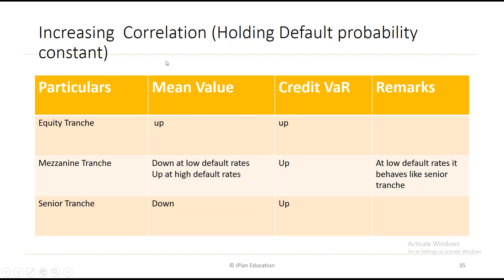The convexity of tranches: at low correlation, the equity value is positively convex in default rates — losses rise rapidly as the default rate rises from a low level, but as defaults increase further, the responsiveness of equity value drops. If you are long the equity tranche, once you have lost most of your investment due to increases in default rates, you lose a bit less from the next increase. For low correlation, the senior bond tranche has negative convexity — its losses accelerate as defaults rise.